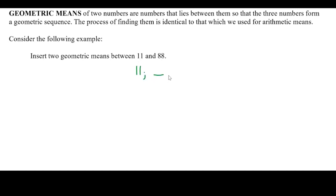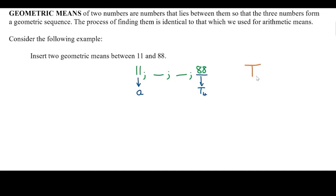That means we want to find two numbers to put in between 11 and 88 so that all of our numbers form a geometric sequence. What we do know is that 11 is going to be 'a', and 88 is actually going to be t4 — the first term, then the two we're trying to find, so one, two, three, four.